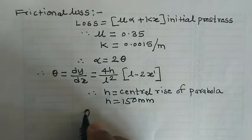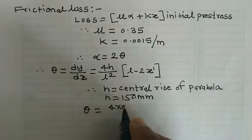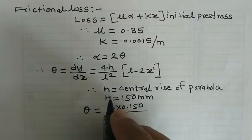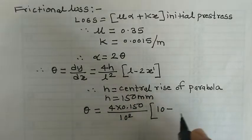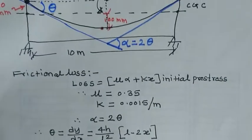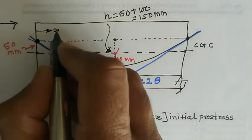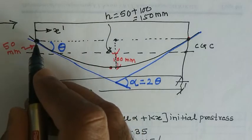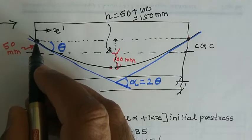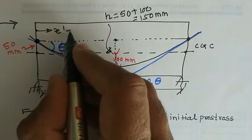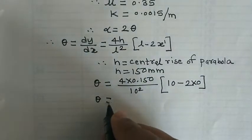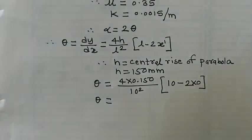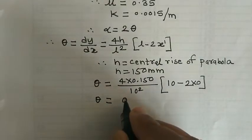The central rise is 150 mm. To find theta, substitute: 4 × 0.150 divided by 10², multiplied by (10 − 2 × x'). Since we are calculating theta at the jacking end, x' = 0. So theta = 4 × 0.150 / (10 × 10) × 10 = 0.06 radians.